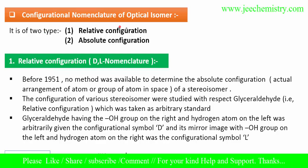As I have already explained, the configuration nomenclature for optical isomers is of two types: relative configuration and absolute configuration. First of all, we will discuss about the relative configuration, that is called DL nomenclature.